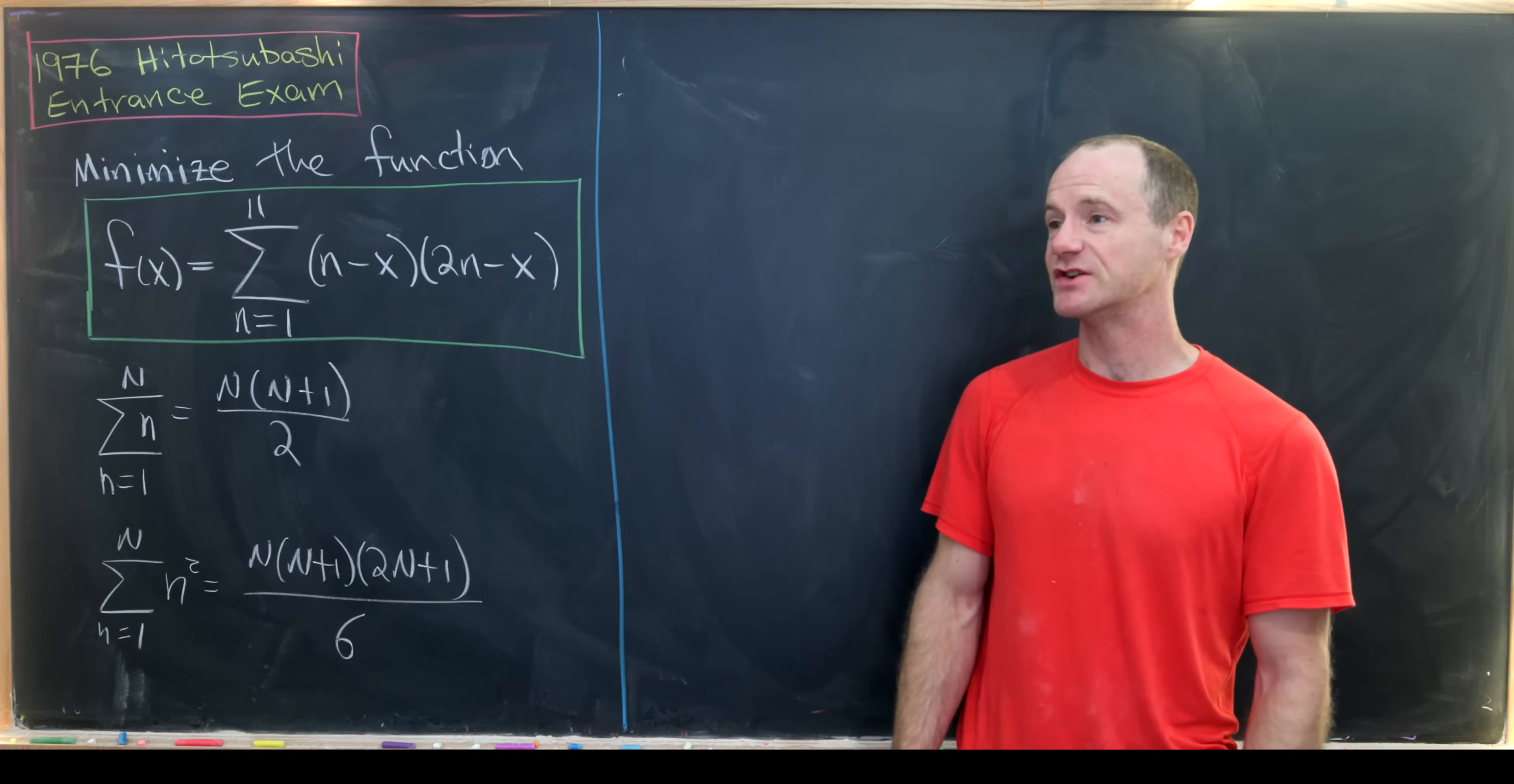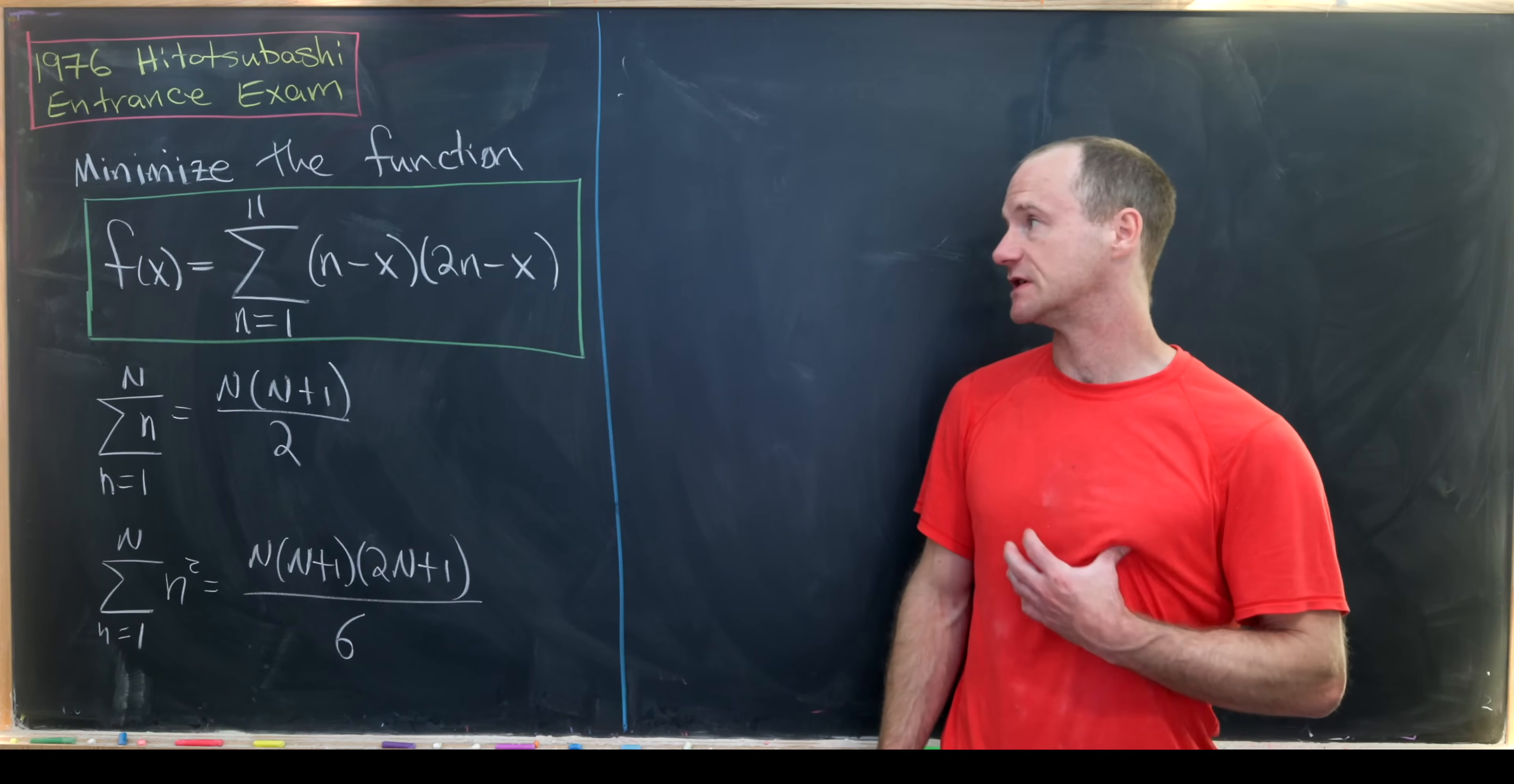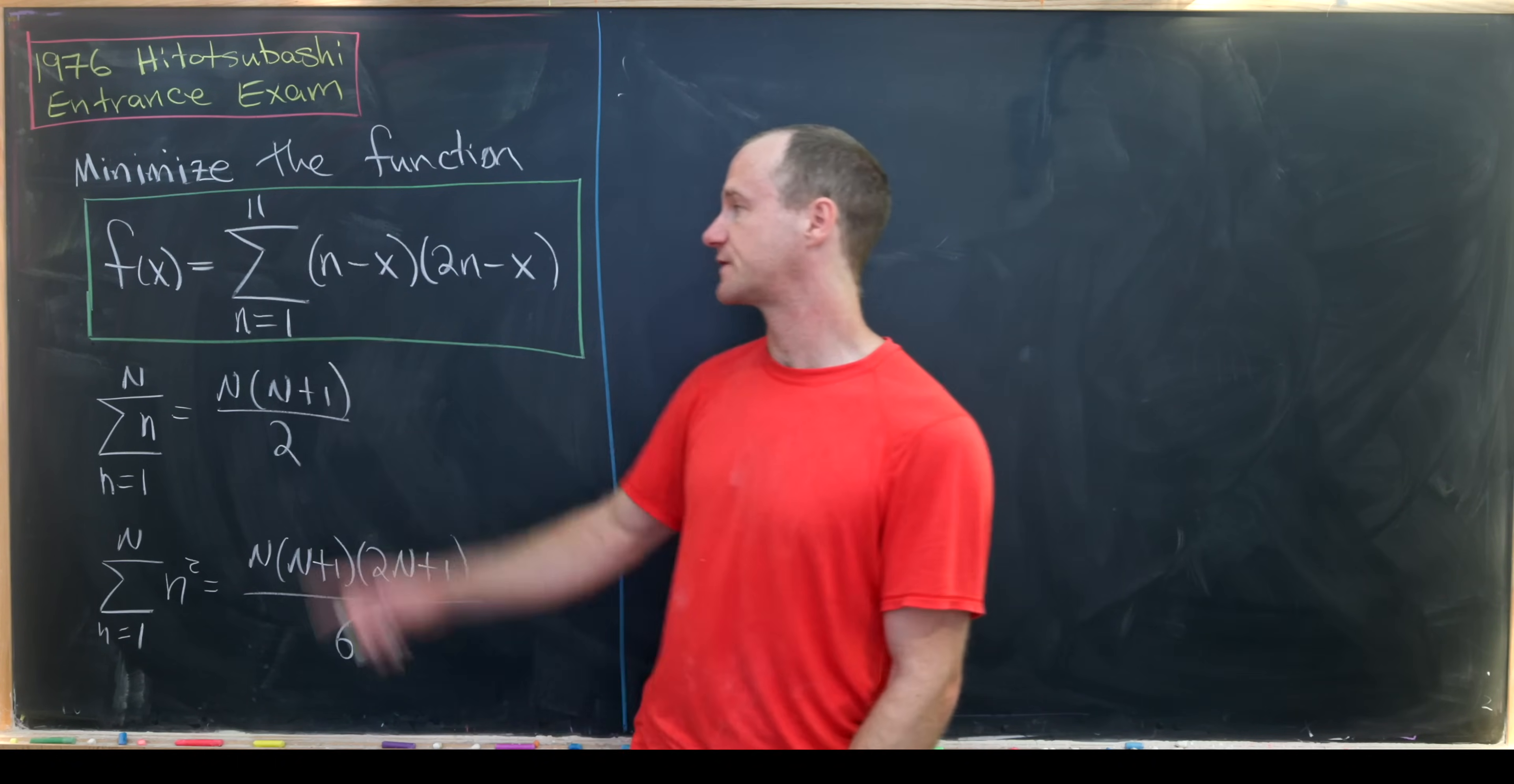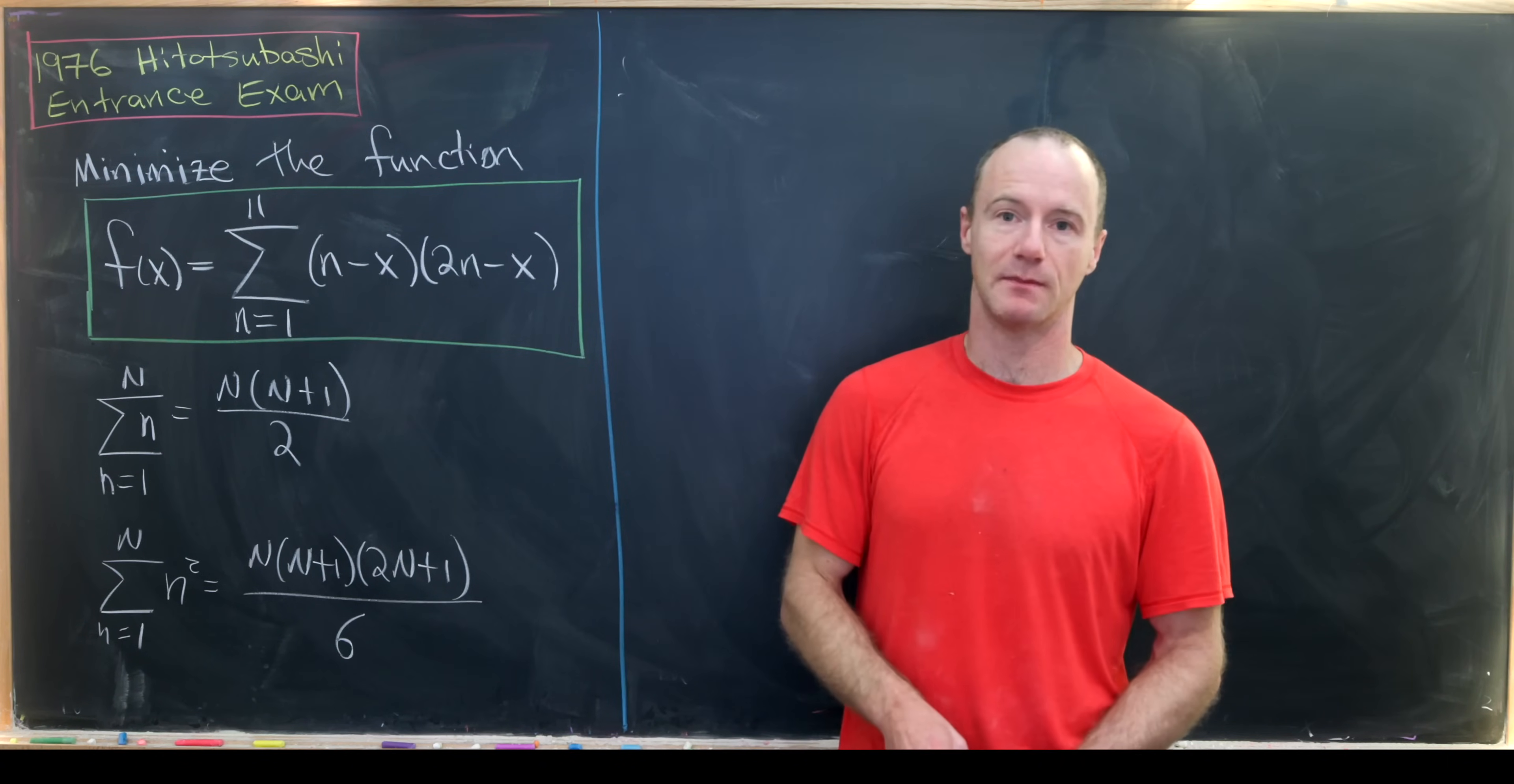Today we're going to look at a nice problem which was on an entrance exam in 1976 to a Japanese university. Our goal is to minimize the function f(x) which equals the sum as n goes from 1 to 11 of (n-x)(2n-x).